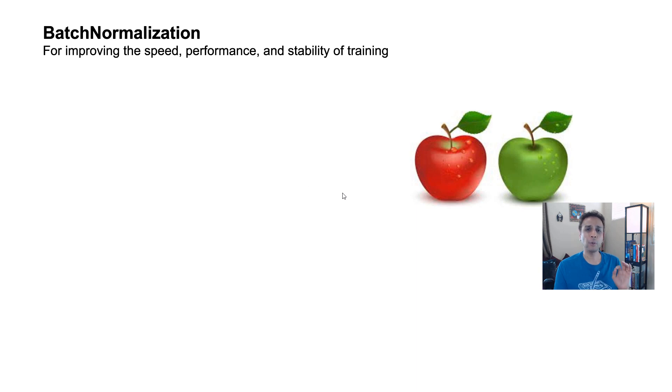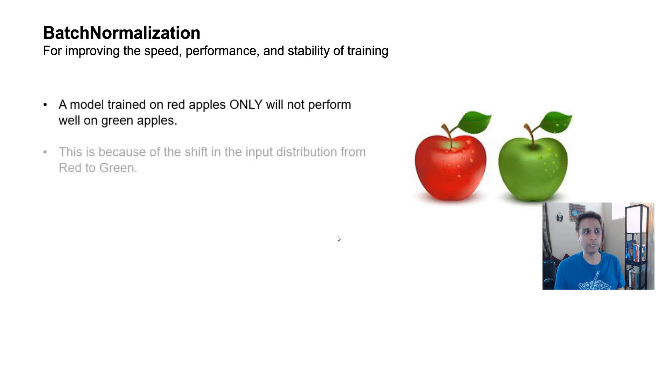Let me give you a quick reason. Let's say you have a model that you are training on a whole bunch of red apples, but now you're trying to apply that on a green apple. It may not work out. It will not perform very well. That's because of the shift in the input distribution. For the red apples, the input distribution is one way, and for the green apple, the input distribution is shifting towards the green side of the curve.